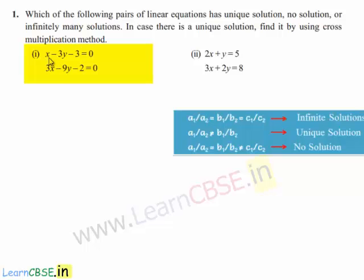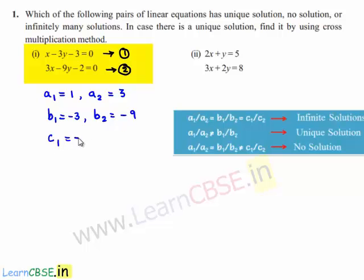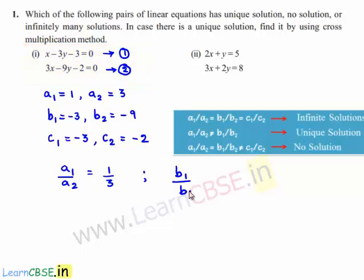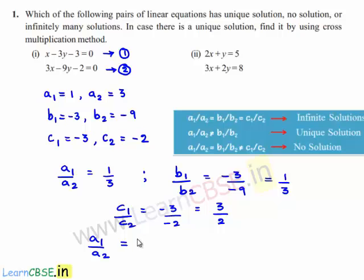Coming to the first bit: x - 3y - 3 = 0 (equation 1) and 3x - 9y - 2 = 0 (equation 2). So a1 = 1, a2 = 3, b1 = -3, b2 = -9. Therefore a1/a2 = 1/3, b1/b2 = -3/-9 = 1/3, and c1/c2 = -3/-2 = 3/2. We observe that a1/a2 = b1/b2, which is not equal to c1/c2.